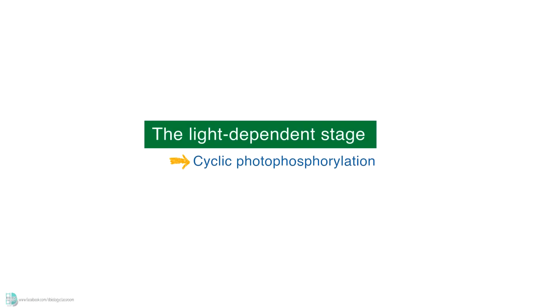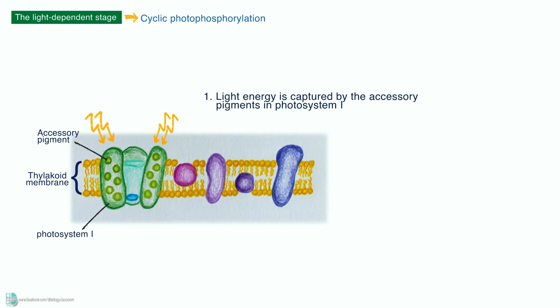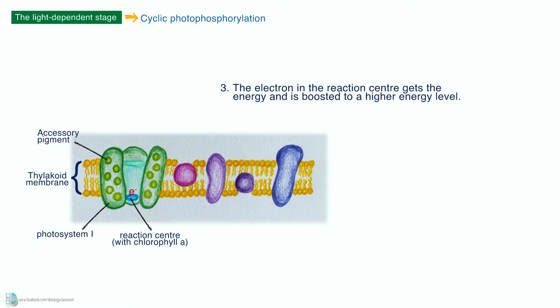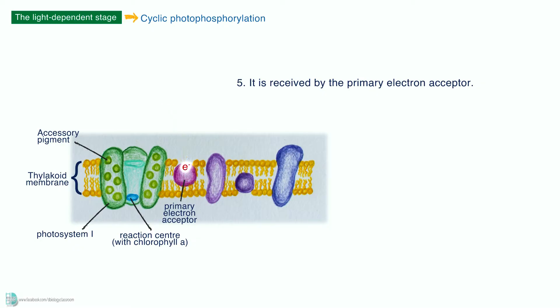Let's look at the cyclic photophosphorylation. Light energy is captured by the accessory pigments in photosystem I. The energy is passed to the reaction center where chlorophyll A is located. The electron in the reaction center gets the energy and is boosted to a higher energy level. The excited electron is emitted from the reaction center, received by the primary electron acceptor, and then passed along a series of electron carriers in the ETC, electron transport chain.